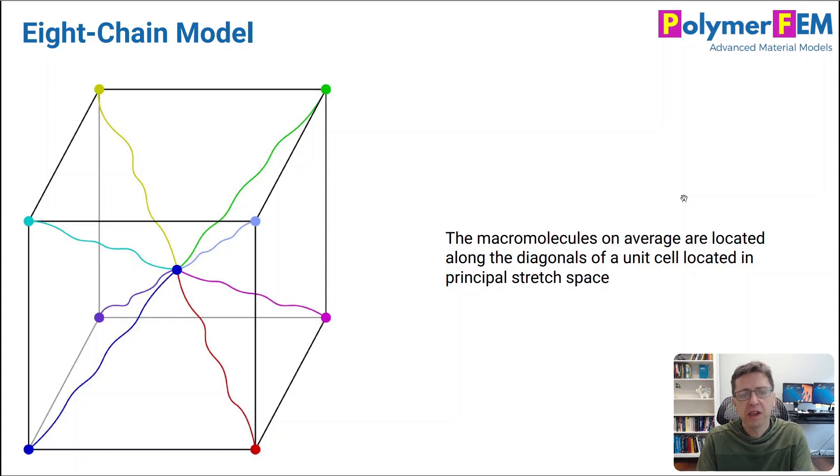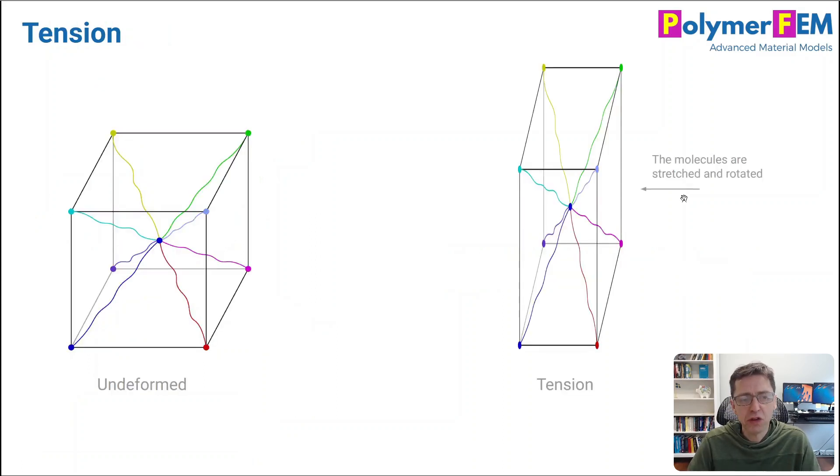But in shear, there is a difference because they are rotated relative to each other. But let's take a look at uniaxial tension first. So here is the idea that these molecules are along the diagonal of a little cube that sits in the material.